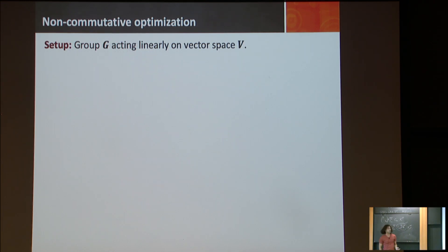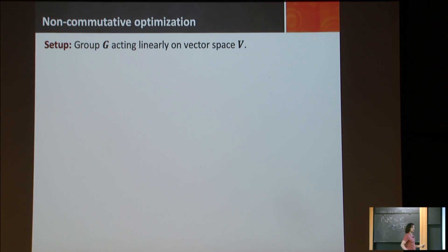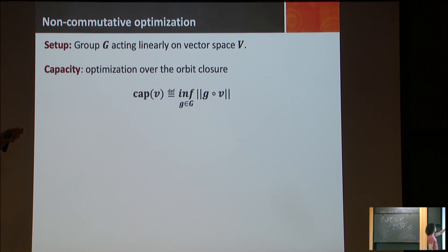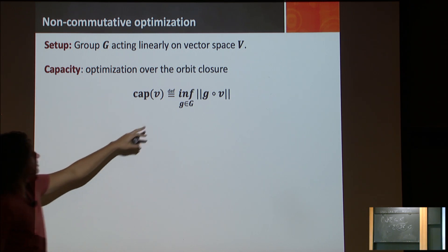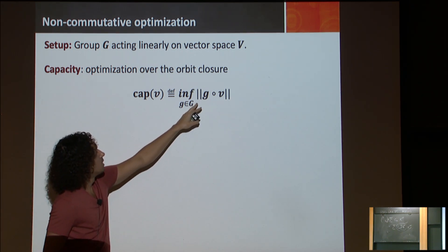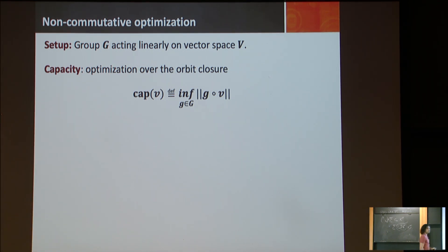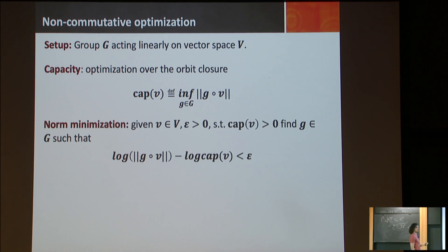Now let's talk about non-commutative optimization and set up the general case. The setup is a group acting linearly in a vector space V. The capacity is the optimization over the orbit closure: we want to find the infimum over all elements of the group G of the norm of G applied to V. Being in the null cone is when the capacity is zero.